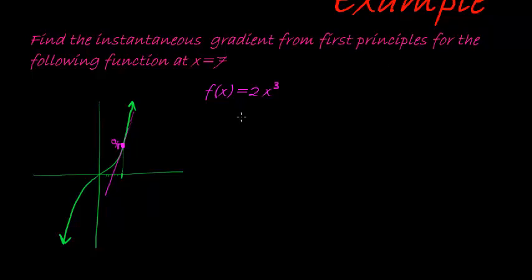To do that, we use first principles, which means that we are trying to find the instantaneous gradient. And we find that by saying what happens when x tends to 7. In other words, I am trying to get to 7, to the gradient. And the gradient is given by f of x minus f of a, so let's start with the formula. Before we substitute, x minus a, that's the formula for instantaneous gradient at a certain point, at point a. So this is actually now a is equal to 7.